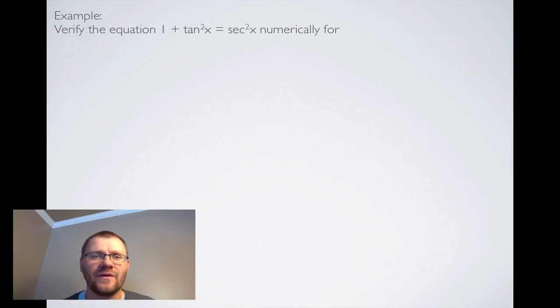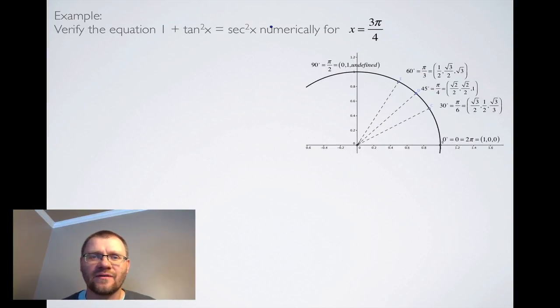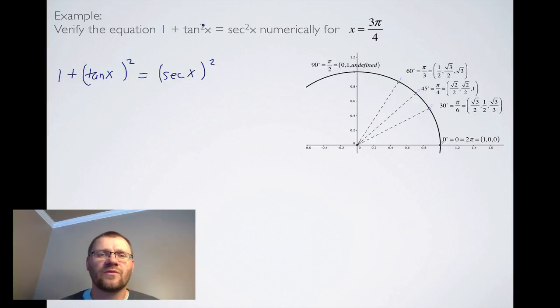One last identity example: verify the equation 1 plus tan squared x equals secant squared x numerically for x equals 3 pi over 4. What we need to do is replace tan squared x and secant squared x with a number. 1 plus, now remember that tan squared x is the same as saying tan x squared equals secant x squared. This squared is really just on the outside of tan. x is 3 pi over 4. Now what we're saying is tan x means tan of 3 pi over 4. 3 pi over 4 is on this version of the unit circle. 3 pi over 4 is actually over here. We know that tan has to be negative. This is going to be whatever tan of pi over 4 is, so it makes it negative 1.